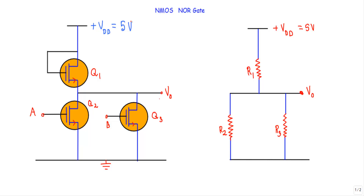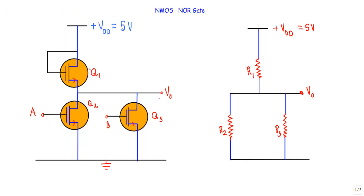In this video I will show you the construction and logical operation of an NMOS NOR gate, meaning the circuit will use N-type MOSFETs to construct the logic gate. We will use MOS logic: logic 1 is +5 volts and logic 0 is 0 volts. As this is a NOR gate, if at least one input is at logic 1, the output will be at logic 0.